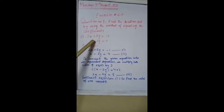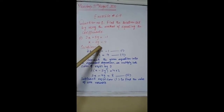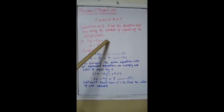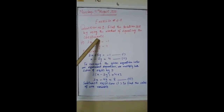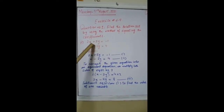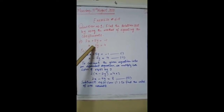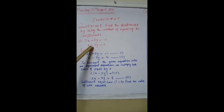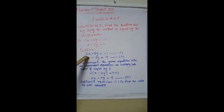Find the solution set by using the method of equating the coefficients. Part 1: 2x + 5y = 1, and x - 2y = 4. In this method, we equate the coefficients of the variables. By multiplying, we equate the equations.